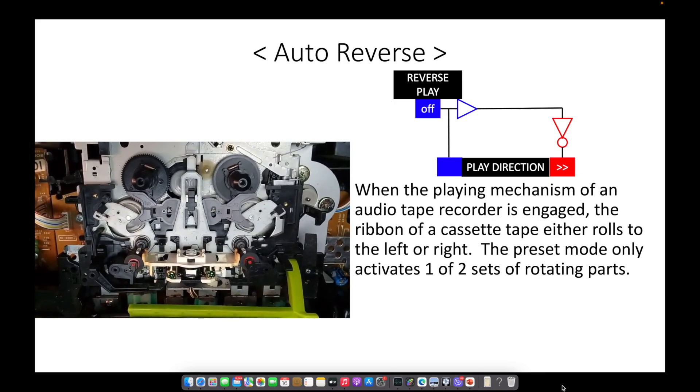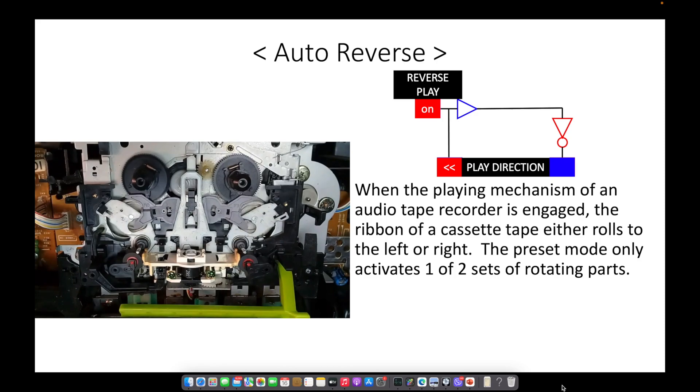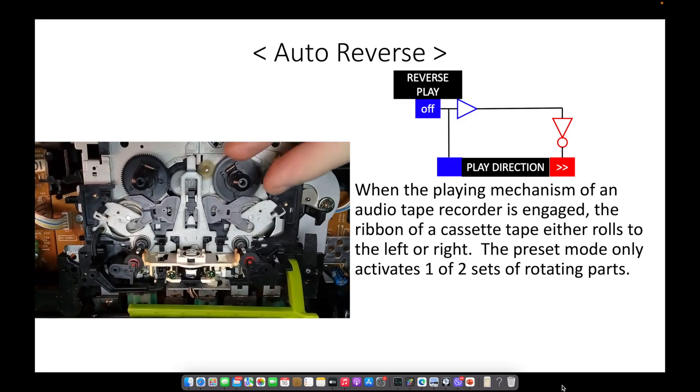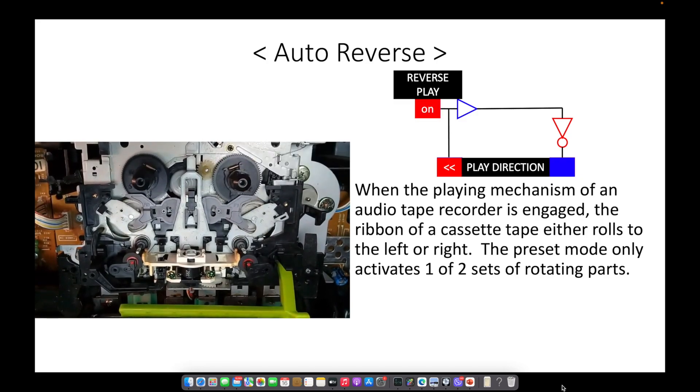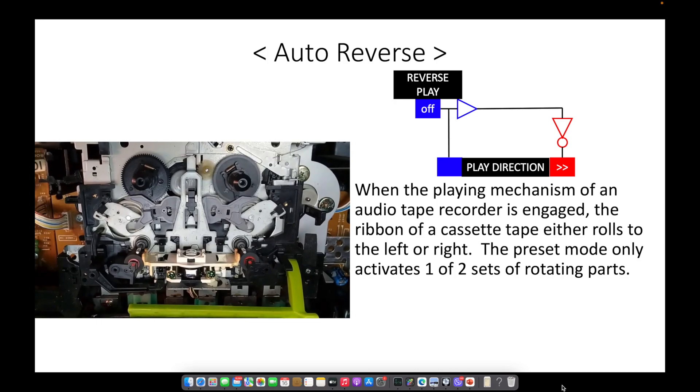When the playing mechanism of an audio tape recorder is engaged, the ribbon of a cassette tape either rolls to the left or to the right. The preset mode of the tape recorder only activates one of two sets of rotating parts.